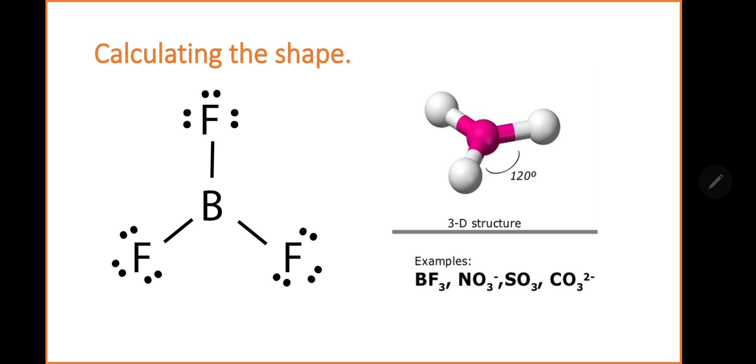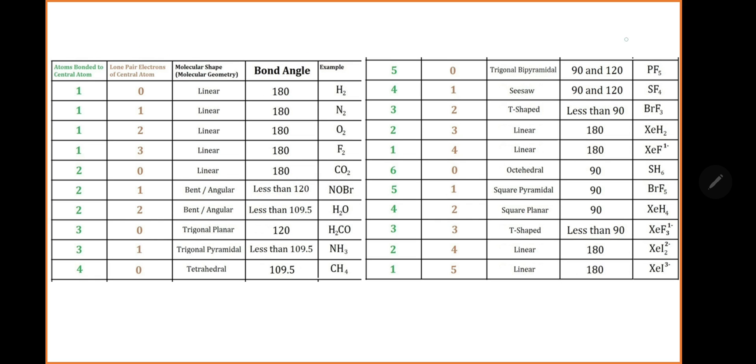How do we work out the shape? We go on to our data table. We need to look for 3 bonding pairs. There we found 3. Do we have any lone pairs? No. So this option here seems like a valid option.